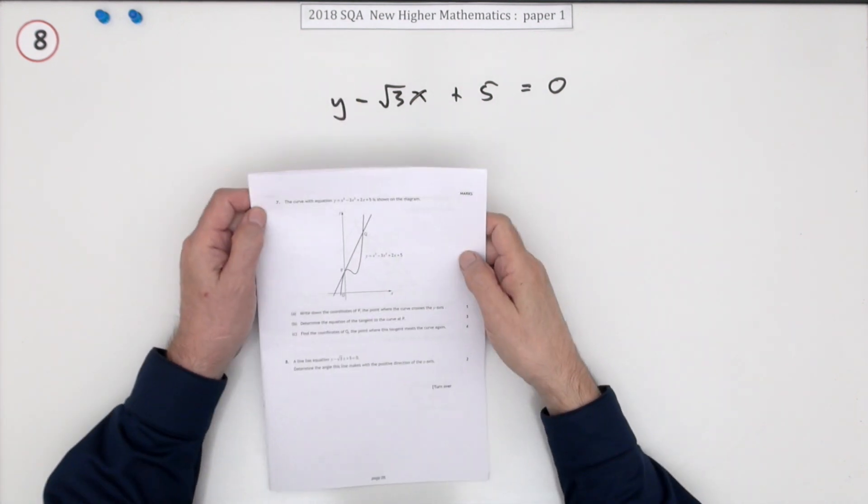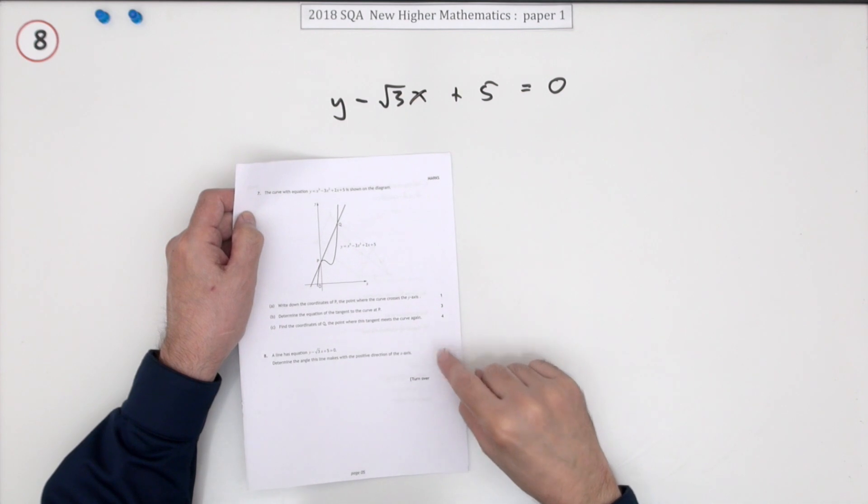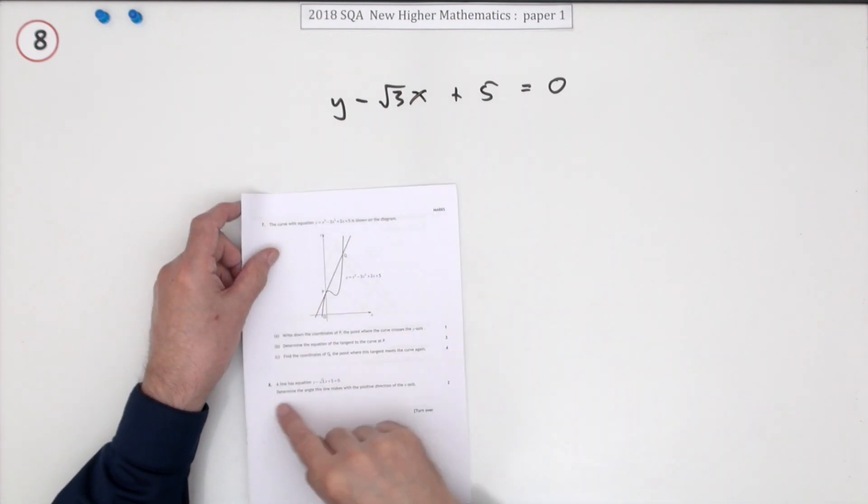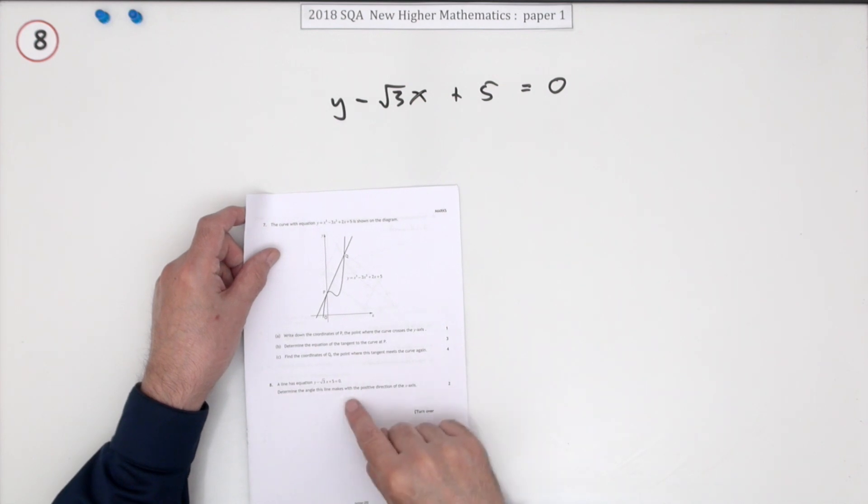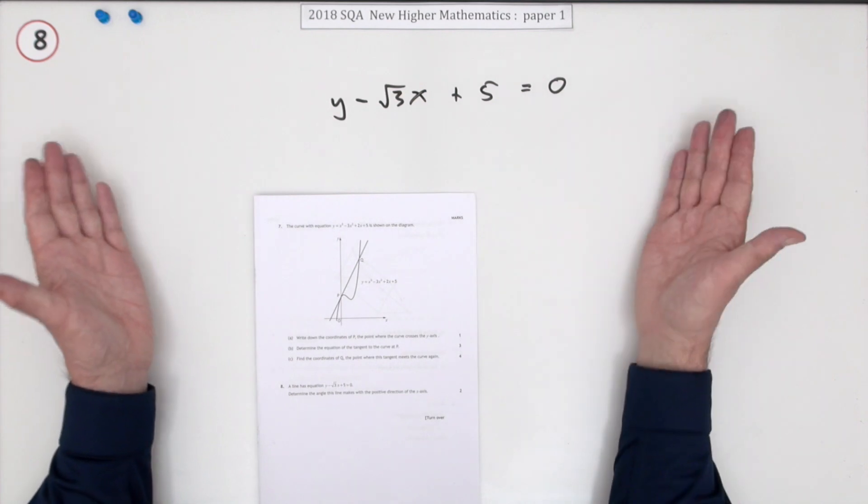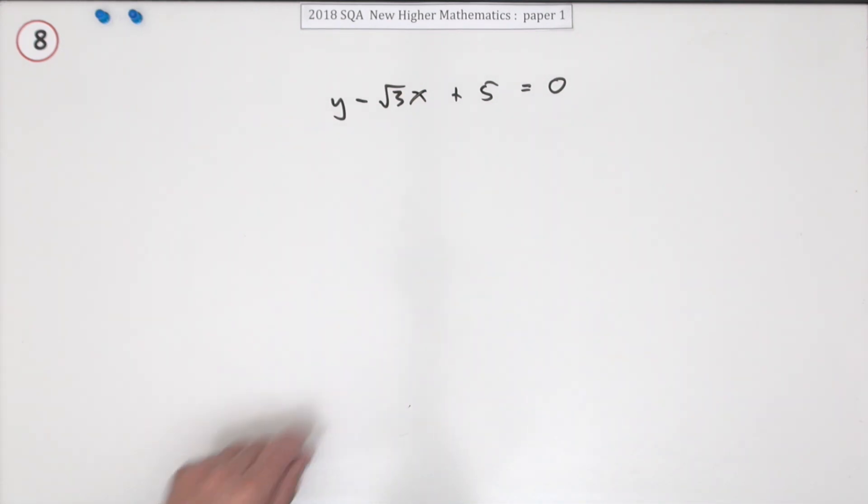Number eight from the 2018 SQA Higher Mathematics paper one. It's worth just two marks. You're given the equation of a line and it says determine the angle the line makes with the positive direction of the x-axis. That's just gradient equals tangent of angle, which means first thing is extract the gradient.